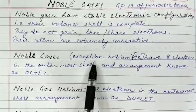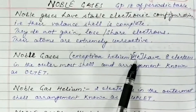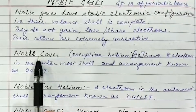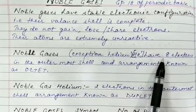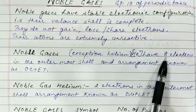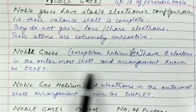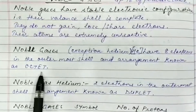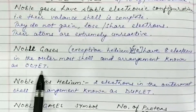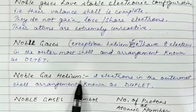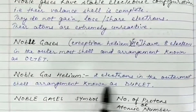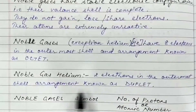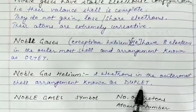There is also a special case of helium. Most noble gases have 8 electrons in the outermost shell, which is why we call it the octet. But helium is a noble gas with only two electrons in the outermost shell — we call this the duplet.